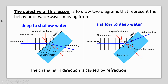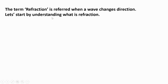The objective of this lesson is to draw two diagrams that represent the behavior of water waves moving from deep to shallow water and shallow to deep water. The change in direction is caused by refraction. The term refraction refers to when a wave changes direction. Let's start by understanding what refraction is.